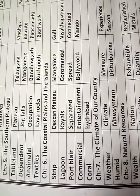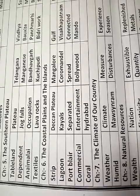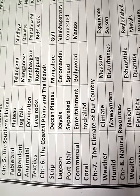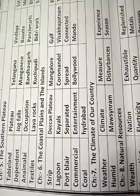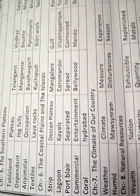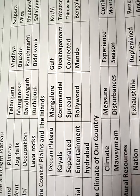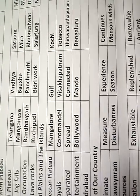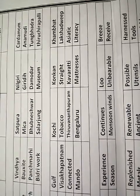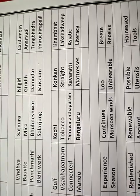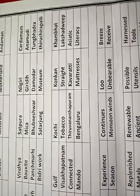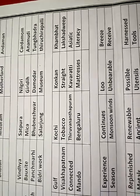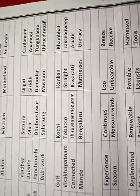Now let's check out the hard words: Strip, Lagoon, Port Blair, Commercial, Coral, Deccan Plateau, Yaks, Khyals, Separated, Entertainment, Hyderabad, Mangalore, Coromandel, Spread, Bollywood, Gulf, Visakhapatnam, Connected, Mando, Kochi, Tobacco, Thiruvananthapuram, Bengaluru, Konkan, Strait, Kavaratti, Mattress, Khambat, Lakshadweep, Asiatic, Literacy. Now let's check out the chapter.